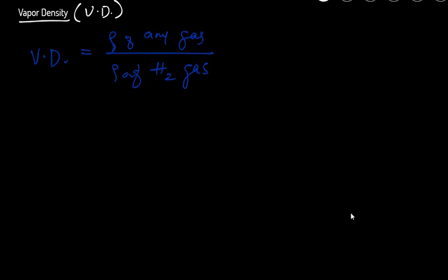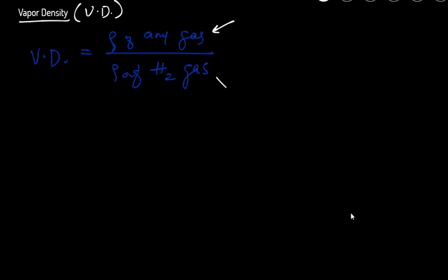This term is actually constant. We know the density of hydrogen gas, or we can calculate it very easily, and then we get the vapor density. We can then use this vapor density formula to calculate the molecular masses of any gas.